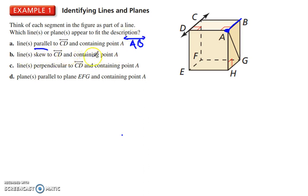Lines skewed to CD and containing point A. So, BG is skewed to CD, but it doesn't contain point A. So going through point A, we've got line AH. But not only AH. AG is also skewed to CD and contains point A.